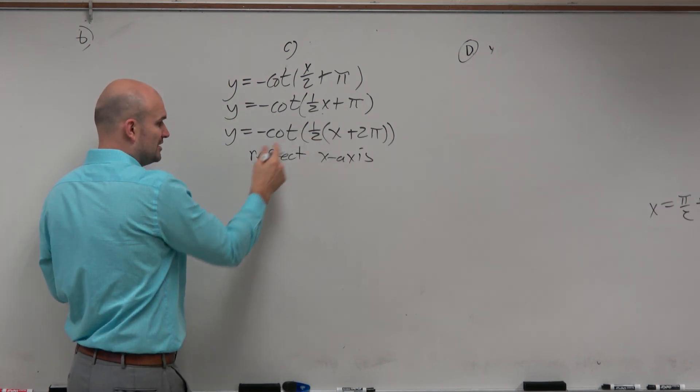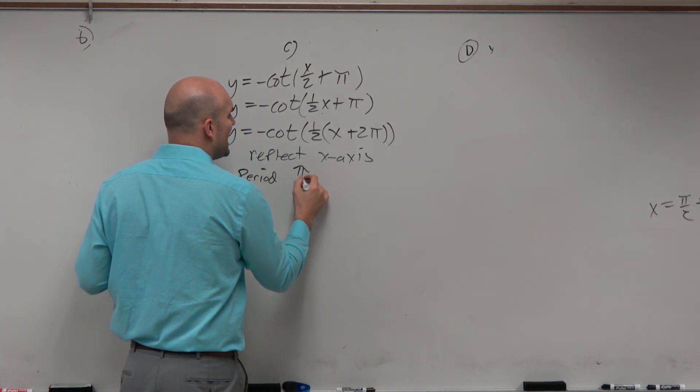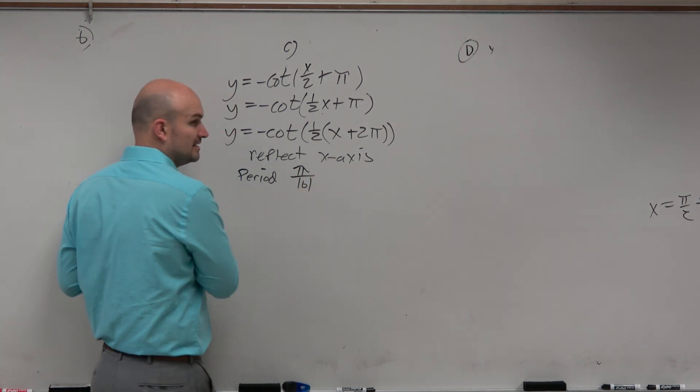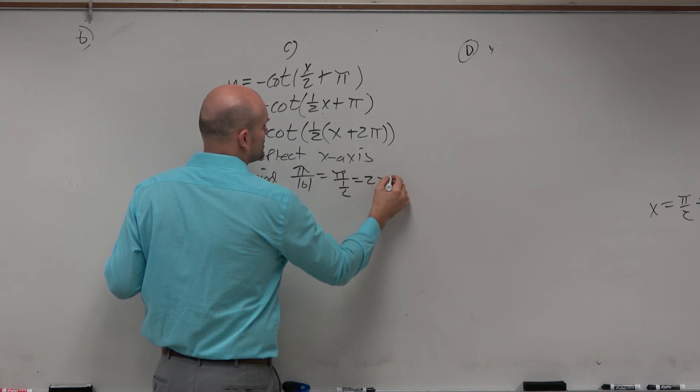This is going to impact my period. But again, remember cotangent is just like tangent. It's pi divided by the absolute value of B. So this is pi divided by 1 half, which is 2 pi.